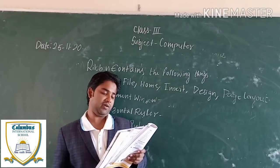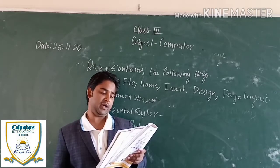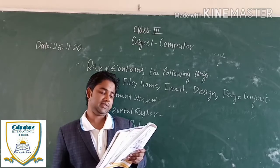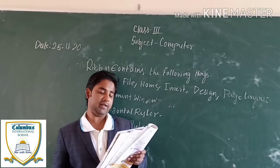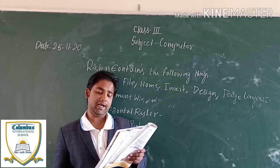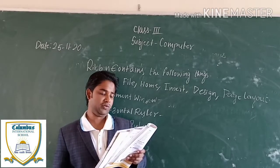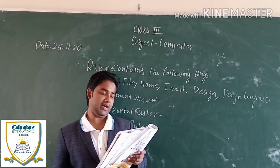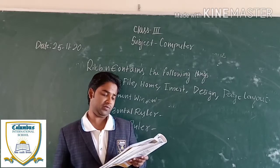Now we will talk about the vertical scroll bar. This is located at the right of the document window, and it is used to move up and down in the document.